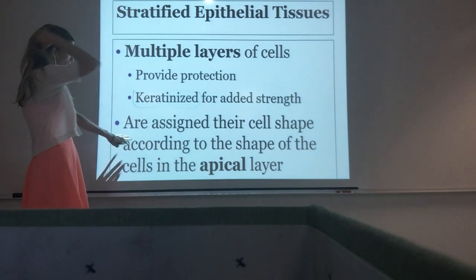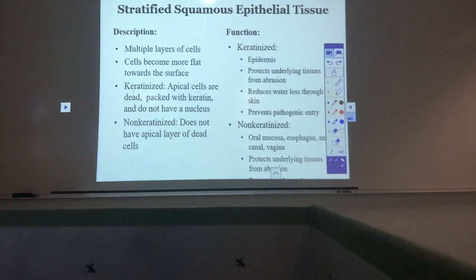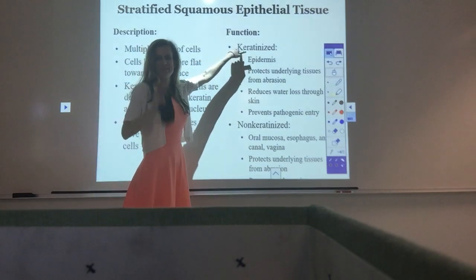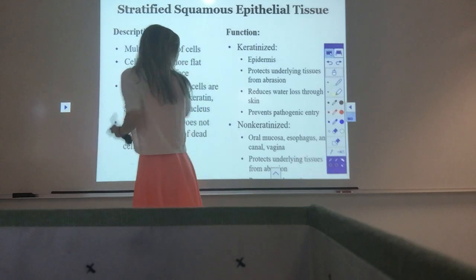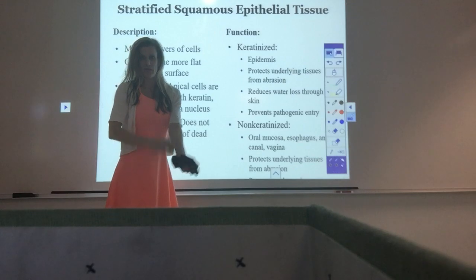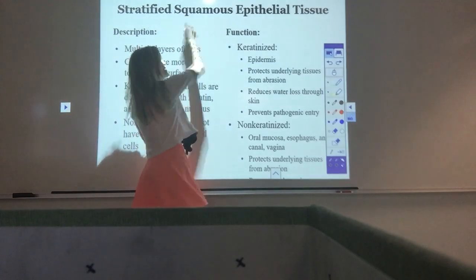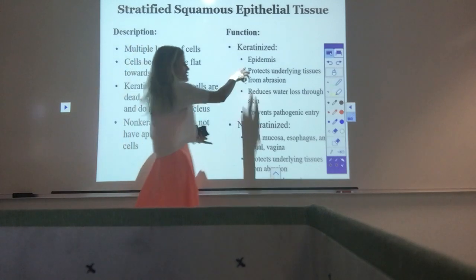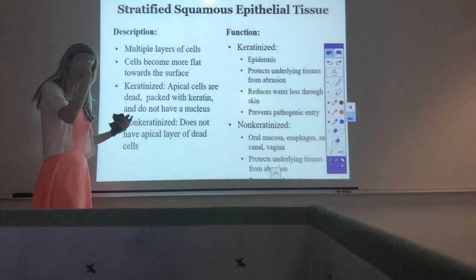When assigning cell shape for stratified tissue, we look at the cells at the top — the apical layer. Stratified squamous epithelial tissue can be keratinized or non-keratinized. The name tells you everything: epithelial — lining an open area; stratified — multiple layers of cells; squamous — cells on top are thin and flat. Keratinized means you see a ton of dead keratin on top; non-keratinized means you don't see that dead keratin layer.